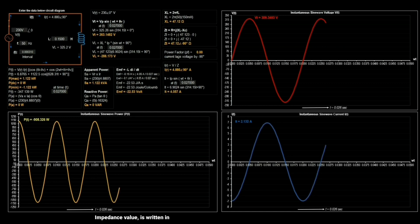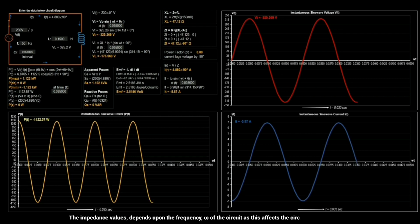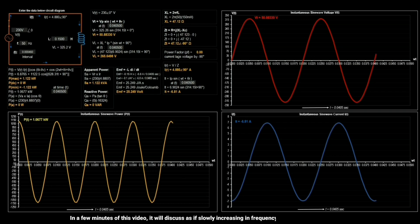Impedance value is written in a complex number, it can be both in rectangular form or polar form. The impedance values depends upon the frequency of the circuit as this affects the circuit's reactive components. In a few minutes of this video, it will discuss as if slowly increasing in frequency, how will affect the impedance.